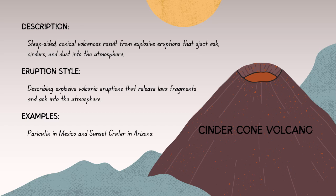Cinder cones are short-lived compared to other volcano types; the construction of the cone occurs rapidly during explosive events. They can be found in various tectonic settings, often occurring on the flanks of larger volcanoes or independently in volcanic fields.